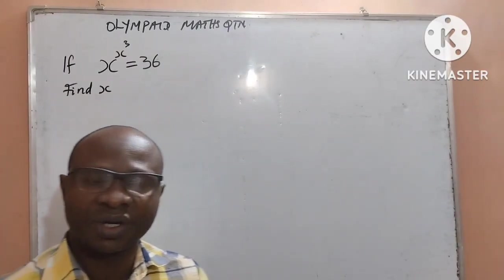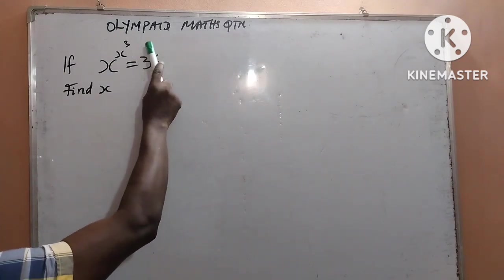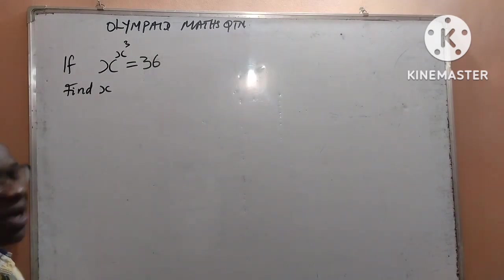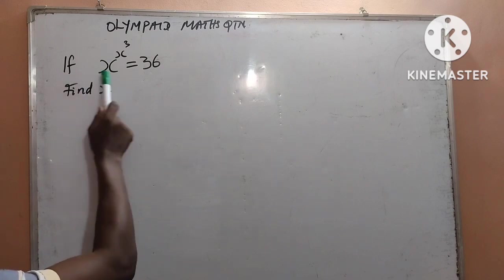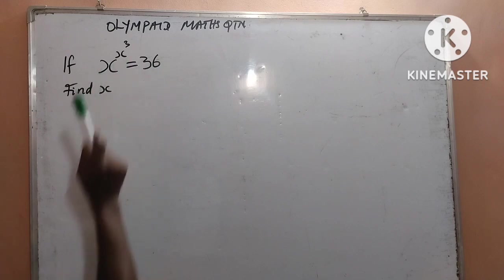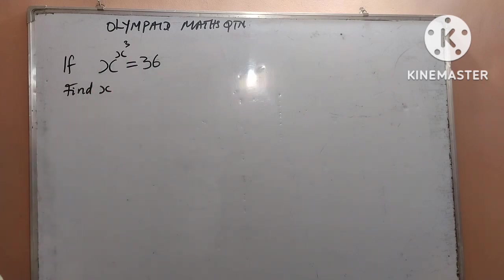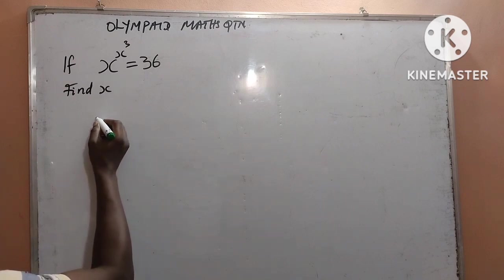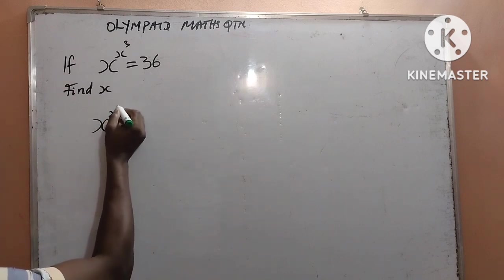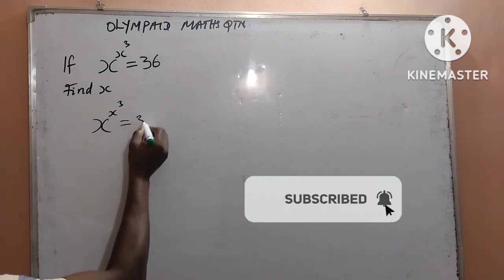Thank you viewers. I am Tutor Kletus Okoli. In today's mathematics class, we shall have an Olympic math question, and we are given: if x to the power of x to the power of 3 is equal to 36, then we shall find the value of x. We dive in — the video is going to be brief. Therefore, given x to the power of x to the power of 3 equal to 36.